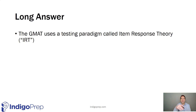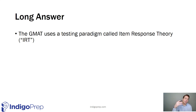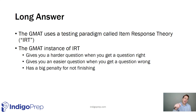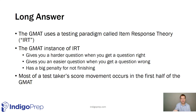The long answer is the GMAT uses a testing paradigm known as item response theory. You can go down a Wikipedia rabbit hole on this — it's different from something called classical testing theory. The GMAT type of IRT has three truths you should absolutely know. Number one, it gives you a harder question when you get a question right. Number two, it gives you an easier question when you get a question wrong. And there is a massive penalty for not answering questions.